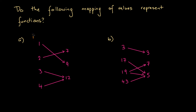Here we've got the inputs and we've got outputs. We know whether something is an input or output because inputs have arrows, and these arrows indicate direction. So here, if we have an input of one and the arrow points to nine, then nine is an output.